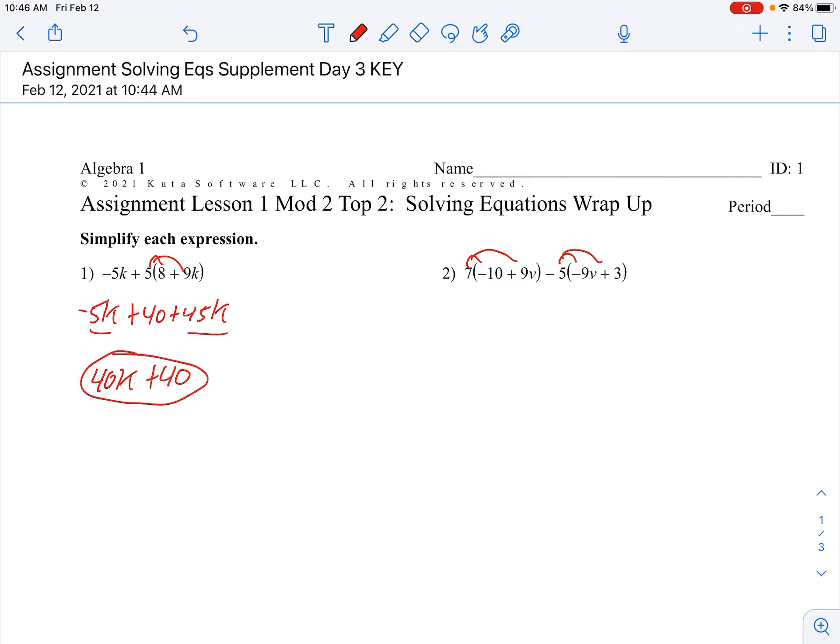Distribute the seven, distribute the negative five. Watch your multiplication: negative 70 plus 63v, and then two negatives make a positive here, so 45v minus 15. Okay, right here this is where the arithmetic could get messed up, so 63 plus 45, watch your arithmetic on there.